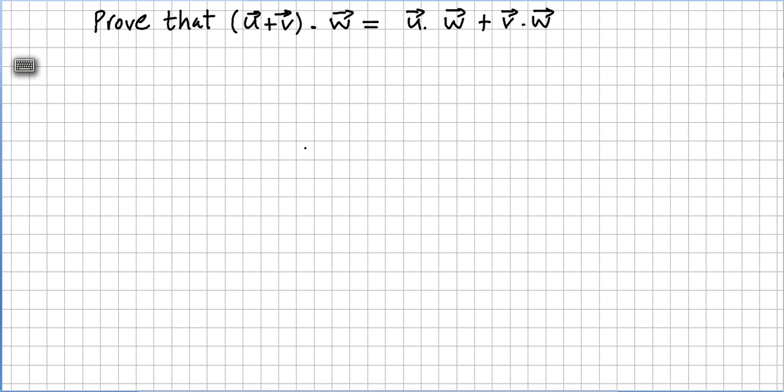In the previous video we saw a particular case where we saw particular vectors, vector u, vector v, vector w, and we were asked to find this value. So we ended up doing u times w plus v times w.